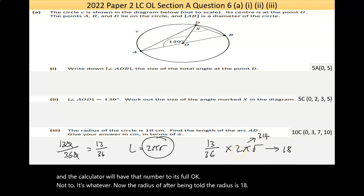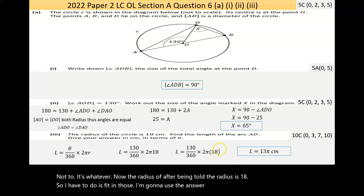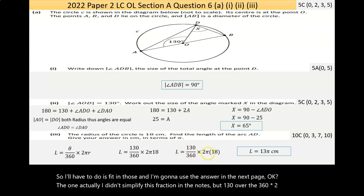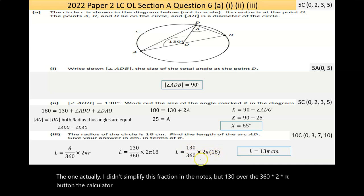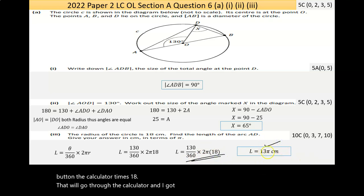I know π is approximately 3.14, and the radius is 18. So 130 over 360 times 2 times π times 18, and I got 13π. The question says give your answer in centimeters in terms of π, and that's that.